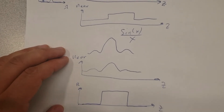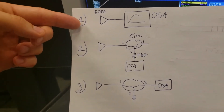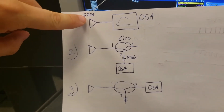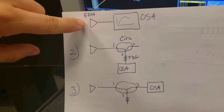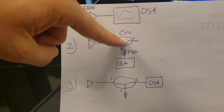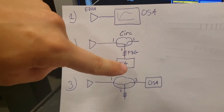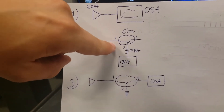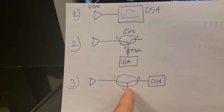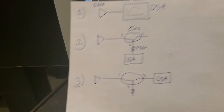Now that we understand the theory, let's see how to use an FBG in practice. I've set up an experiment with a fiber Bragg grating in three steps. First, we'll send EDFA light into the optical spectrum analyzer to see the raw broadband spectrum. Then we'll plug the EDFA into a circulator connected to the FBG and observe the transmission drop. Finally, we'll use the circulator to measure the reflected light and see a single spike at the Bragg wavelength.